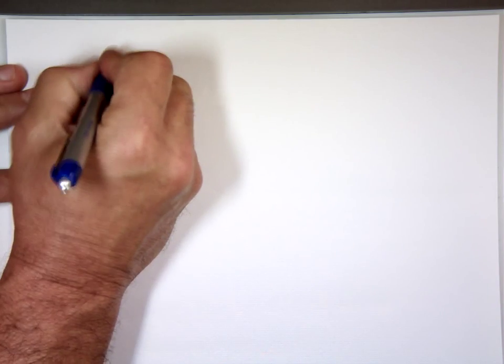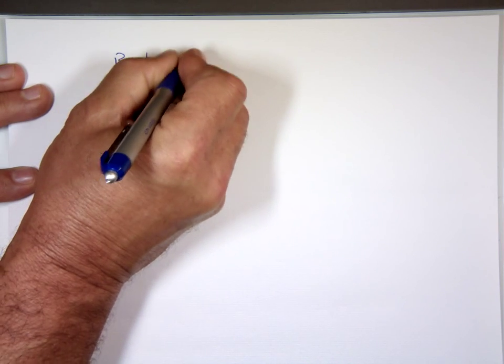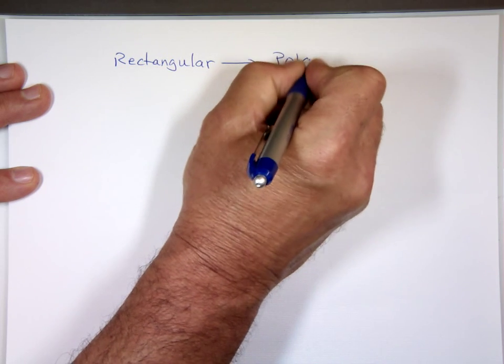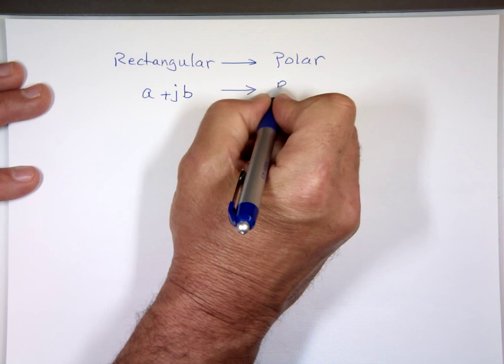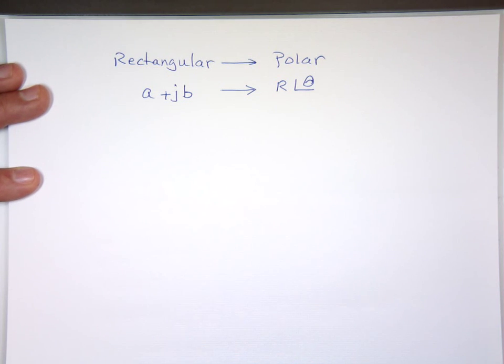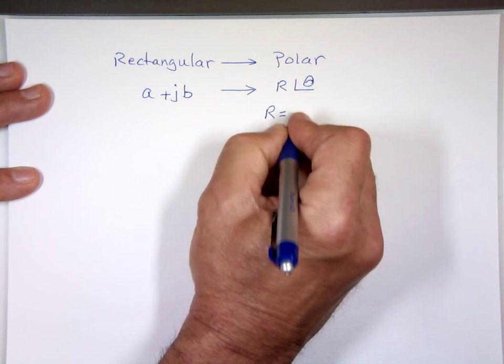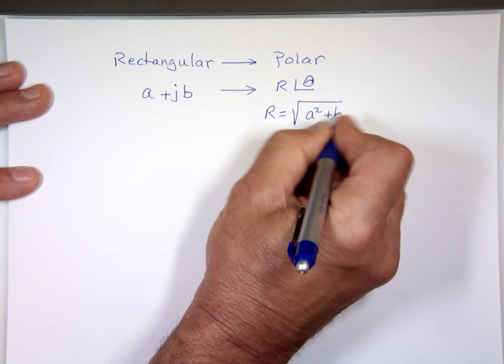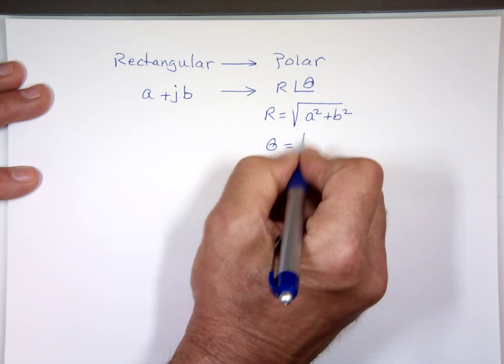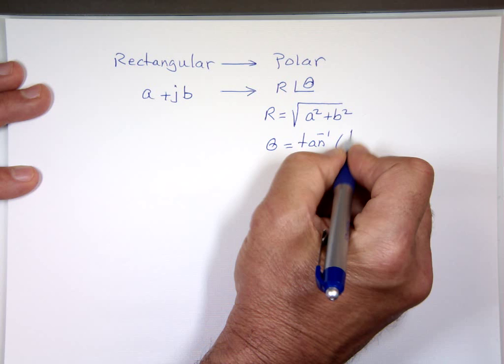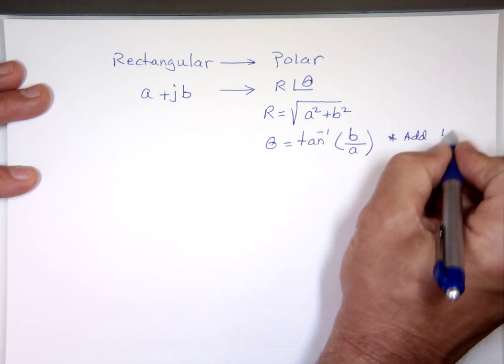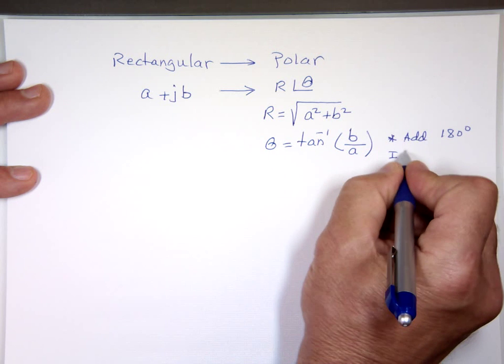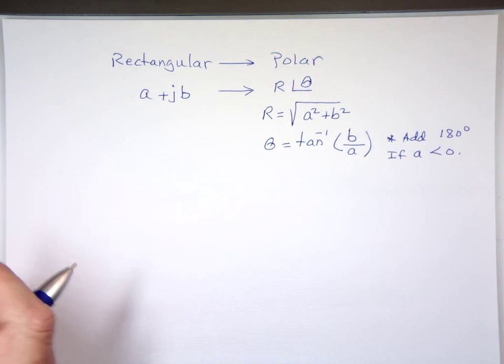So here's what we know. I'm going to make that a rule for you. If you have a rectangular, and you want to switch it to a polar, rectangular will be A plus JB. Polar, when you change it, it's going to say R angle theta. How do you find R? R is the square root of A squared plus B squared. And theta is the inverse tangent of the imaginary, which is B over the real. Keep in mind, here we go, add 180 degrees, because the calculator will be wrong if A is less than 0. Why? Because that means you're in the second or third quadrant.